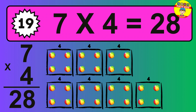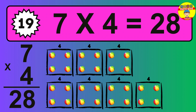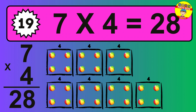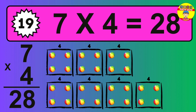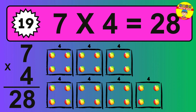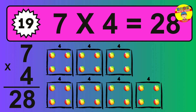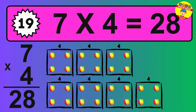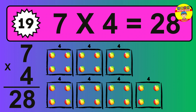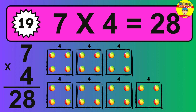The answer is 7 times 4 is 28. To calculate, we have 7 groups with 4 balls each one. So how many balls do we have? 28 balls.